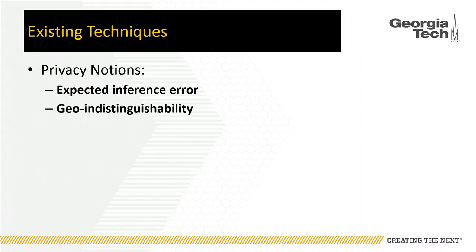There have been two main privacy notions proposed: expected inference error and geo-indistinguishability.